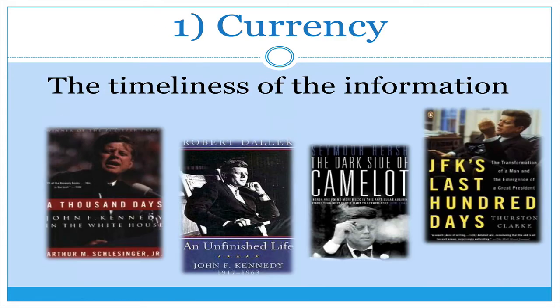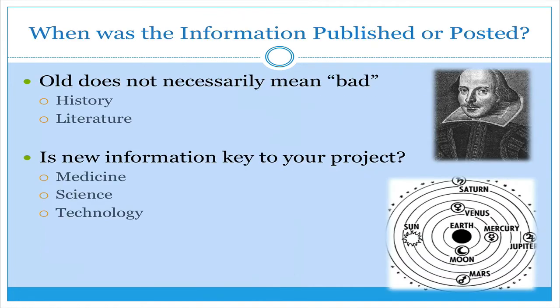The C of the CRAAP test stands for currency. We need to look at the timeliness of the information. When was the information published? How close to the actual event — when it's happening, recently after it has happened, or 50 years after it has happened? Just because information is old doesn't necessarily mean that it's bad. Certain subjects can tolerate research done on older texts — for example, literature class or potentially history class. As we look at other subjects, we might need to find newer information, for example in medicine, science, or technology.